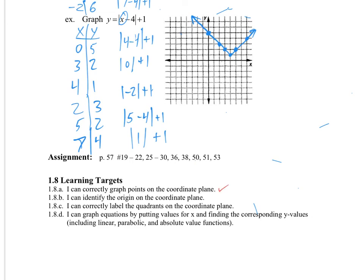So we can correctly graph points on the coordinate plane. Yup. Origin, we know, is right here at the middle, right? Can you label the quadrants? Quadrant number 1 is in the upper right. Quadrant number 3 is in the lower left. Then you can graph the equation by putting in values for x to find the corresponding y-values. Yes. And so on. Awesome.